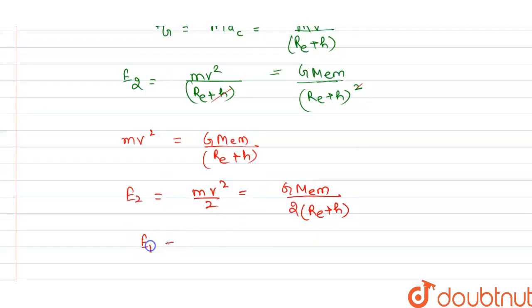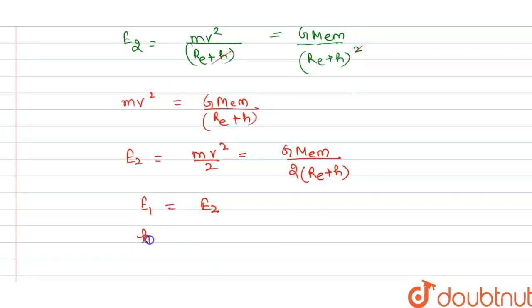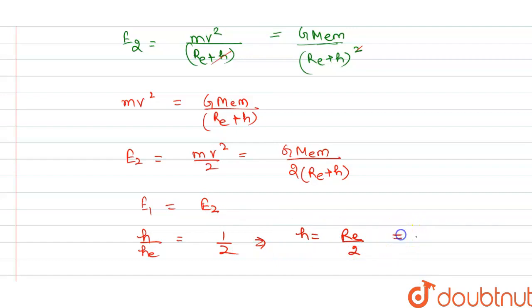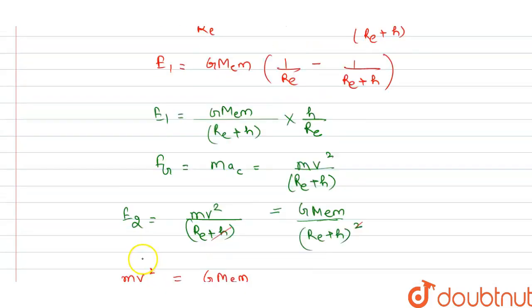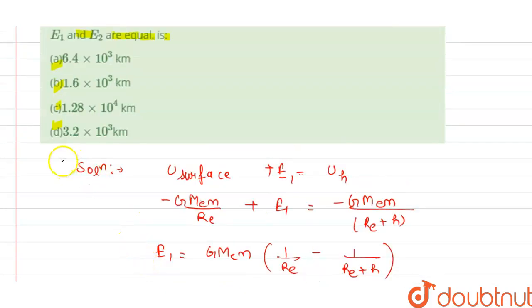Setting E1 equal to E2 and solving, we get h = R/2, which gives h = 3.2 × 10³ km. So option D is correct.